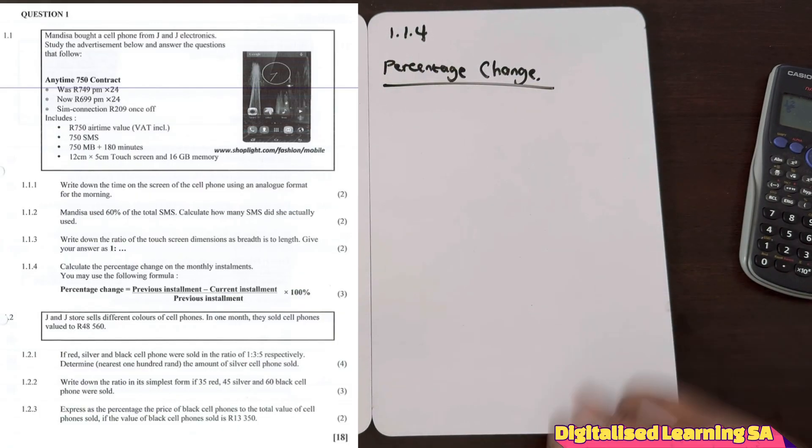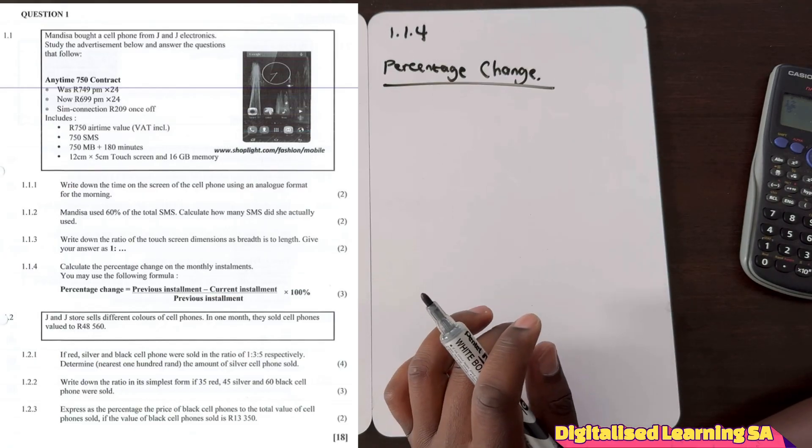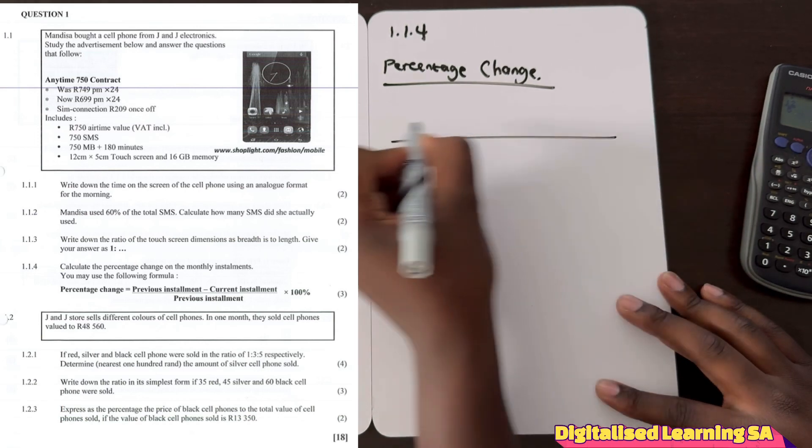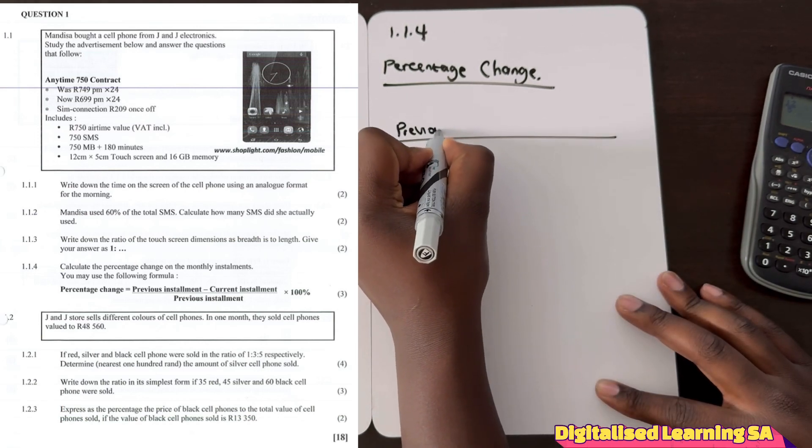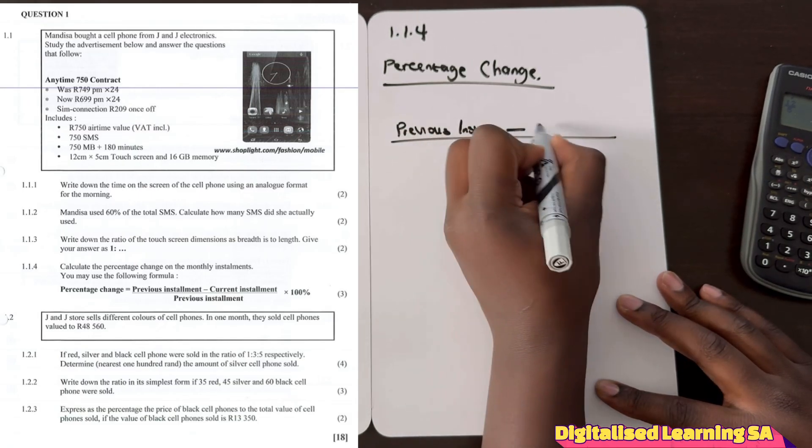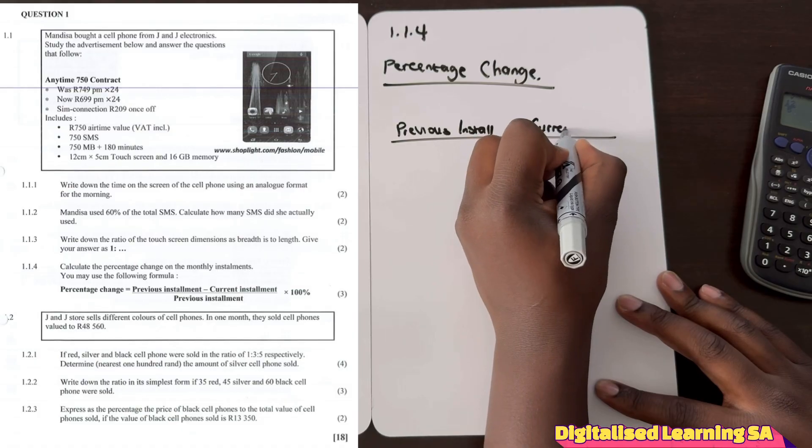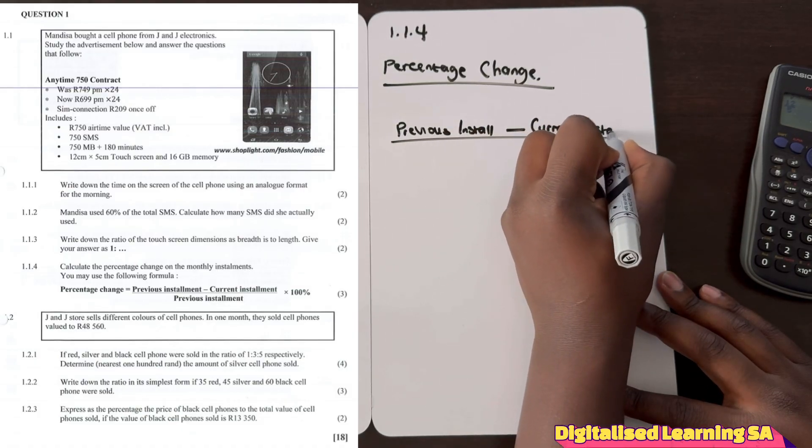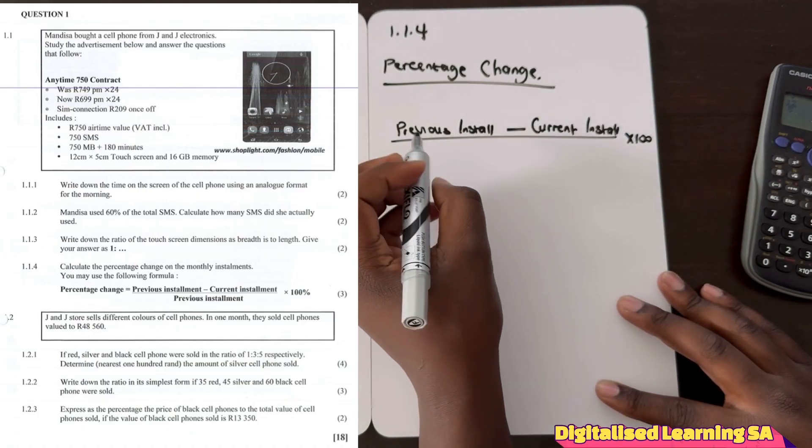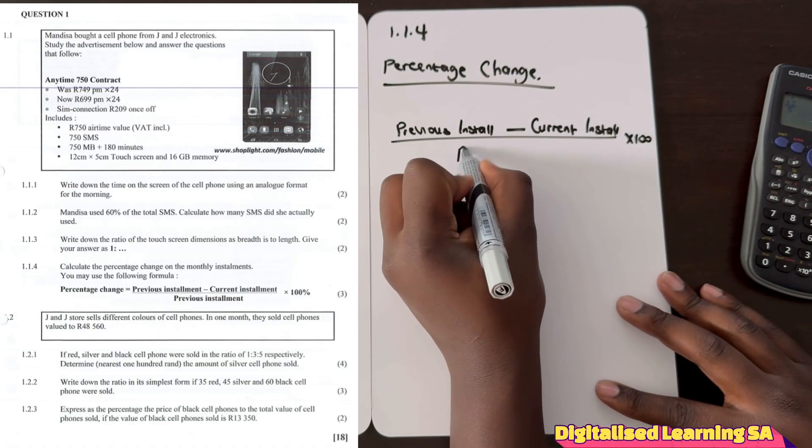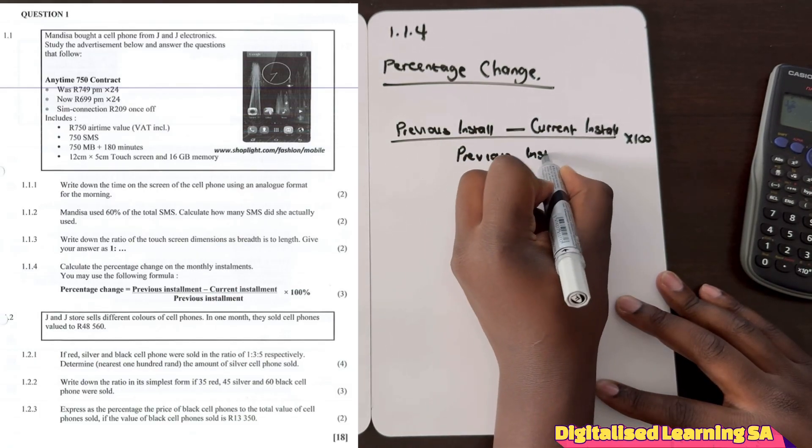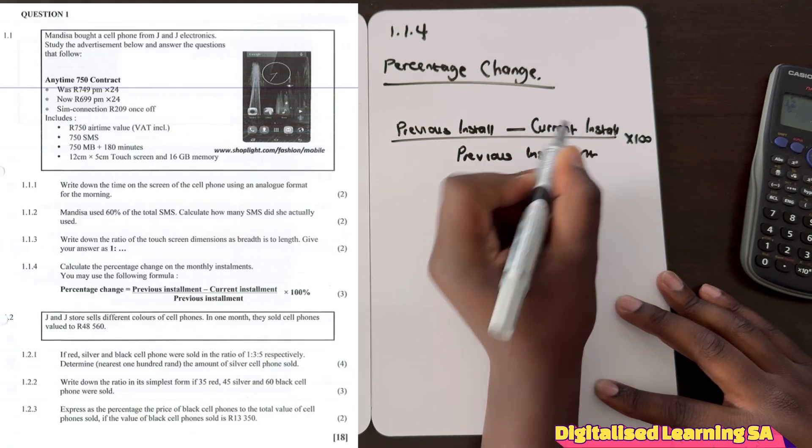So the percentage change formula is that previous installments minus current installments, divided by previous installments.